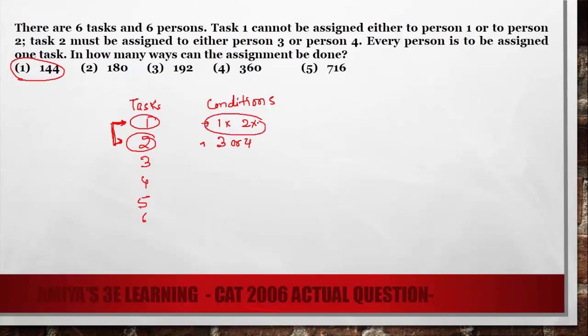First we work on a condition where we have negation. Since we have 6 persons, 1, 2, 3, 4, 5, 6. Task 1, person 1 is out. Person 2 is out for task 1.